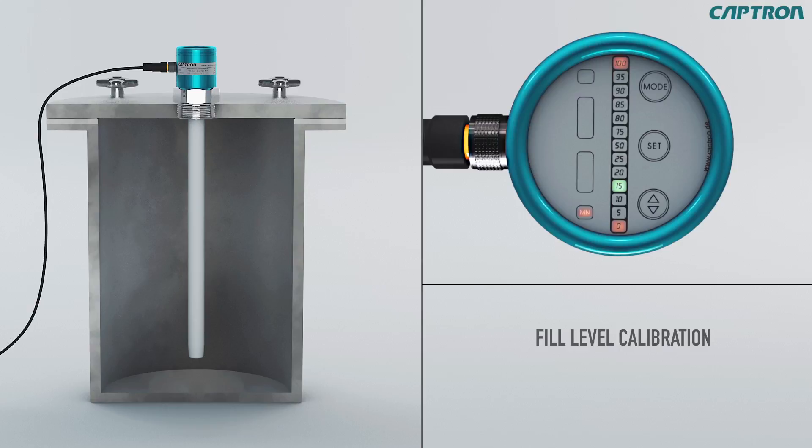Fill the tank with 5 to 25% of the desired measurement range. Now with up-down, you can set the value which corresponds to the actual fill level. Then confirm the value with set. After 5 seconds, the probe will jump to the next step.